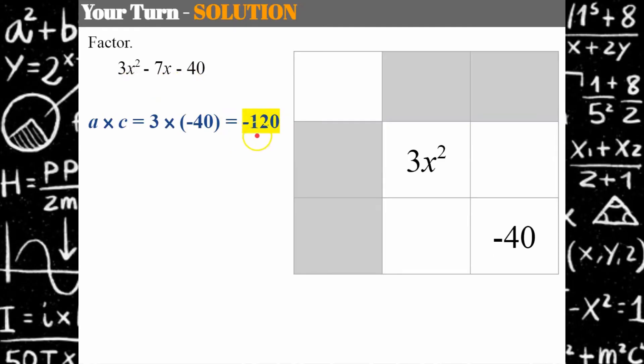I need to know what factors of negative 120 when added give me negative 7, and that's going to be negative 15 and 8. Negative 15 times 8 is negative 120, negative 15 plus 8 is negative 7, and that's what we're looking for. Here's my magic of my square, it's kind of like a magic square, my like terms. So I can start to fill it in.